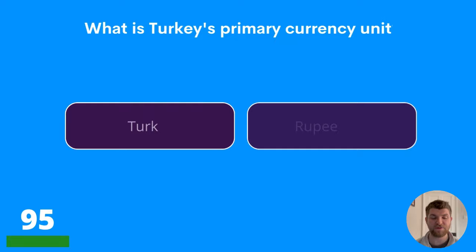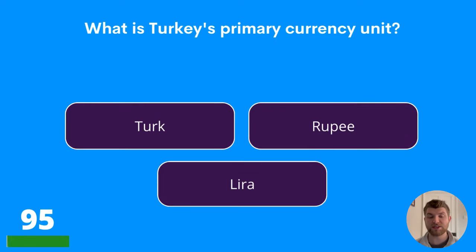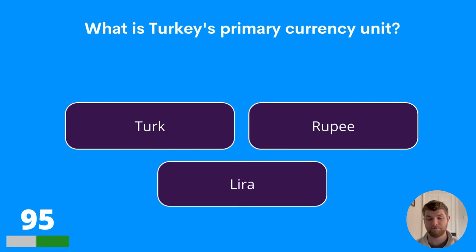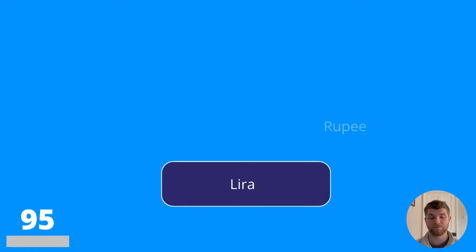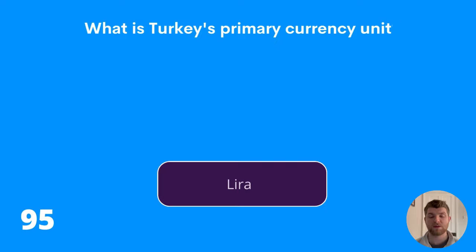Question ninety-five: what is Turkey's primary currency unit? Turk, Rupee, or Lira? The answer is Lira.